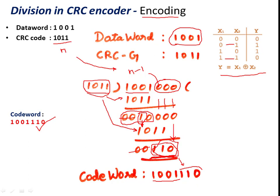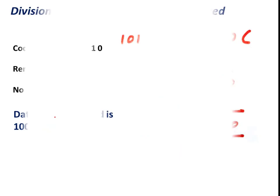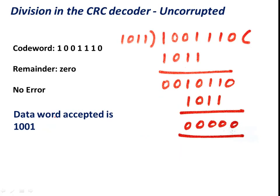This code word is transmitted to the receiver side. At the receiver side, the same CRC code is available. The code word is decoded using the CRC code to find whether the data was received without error.